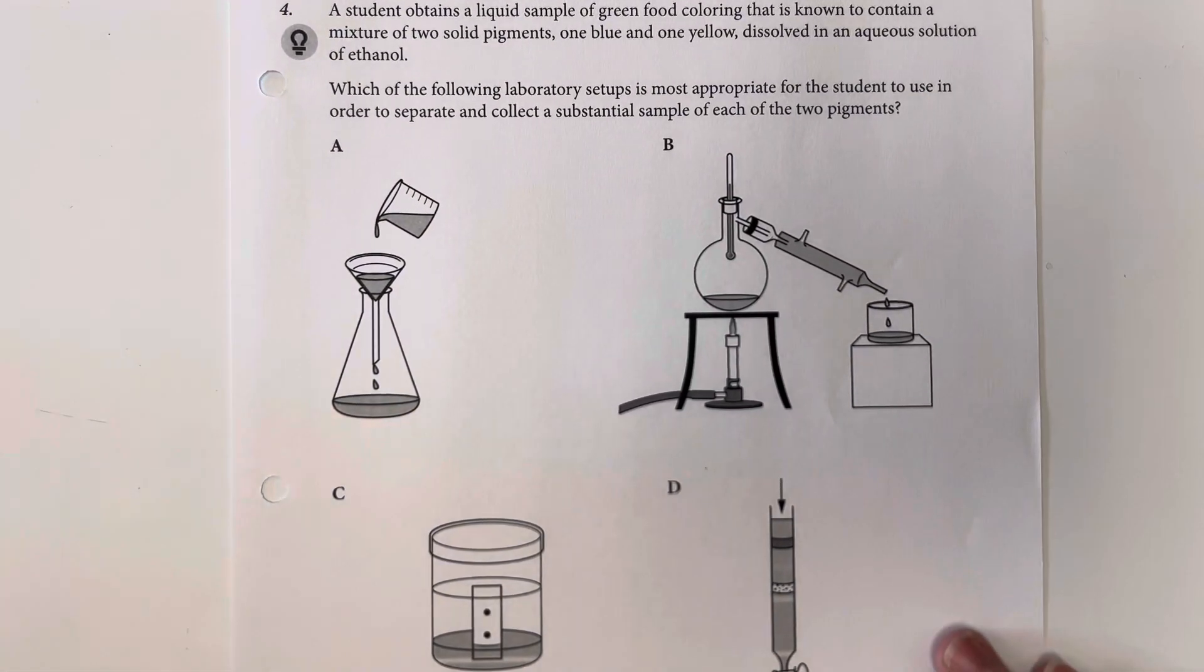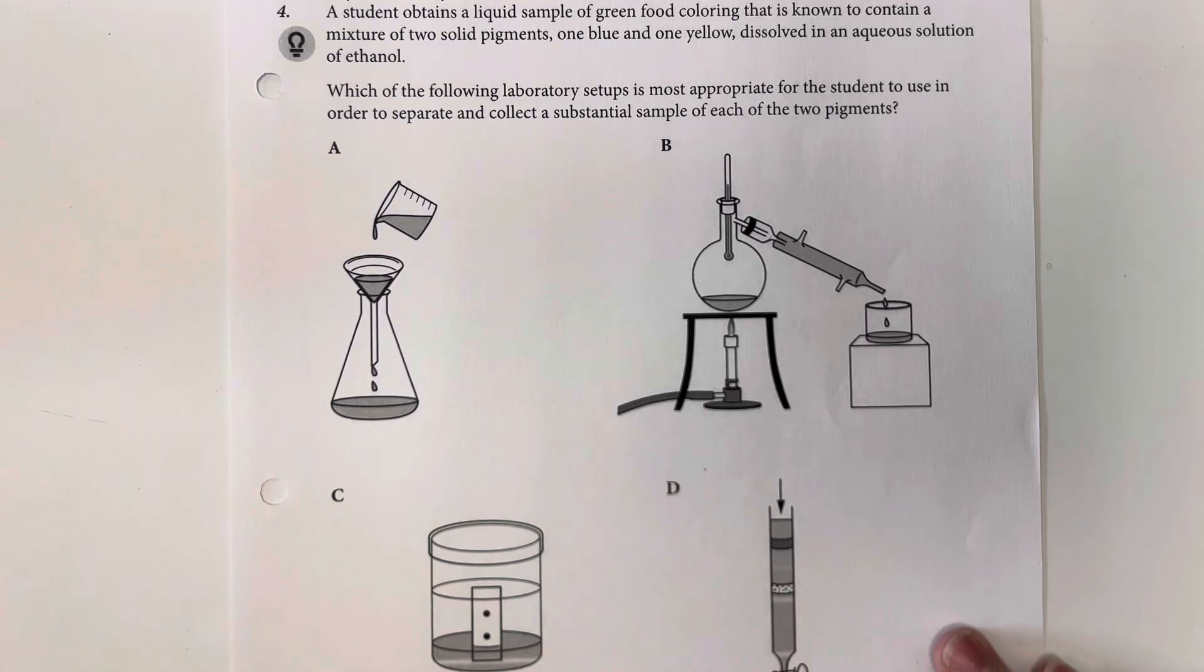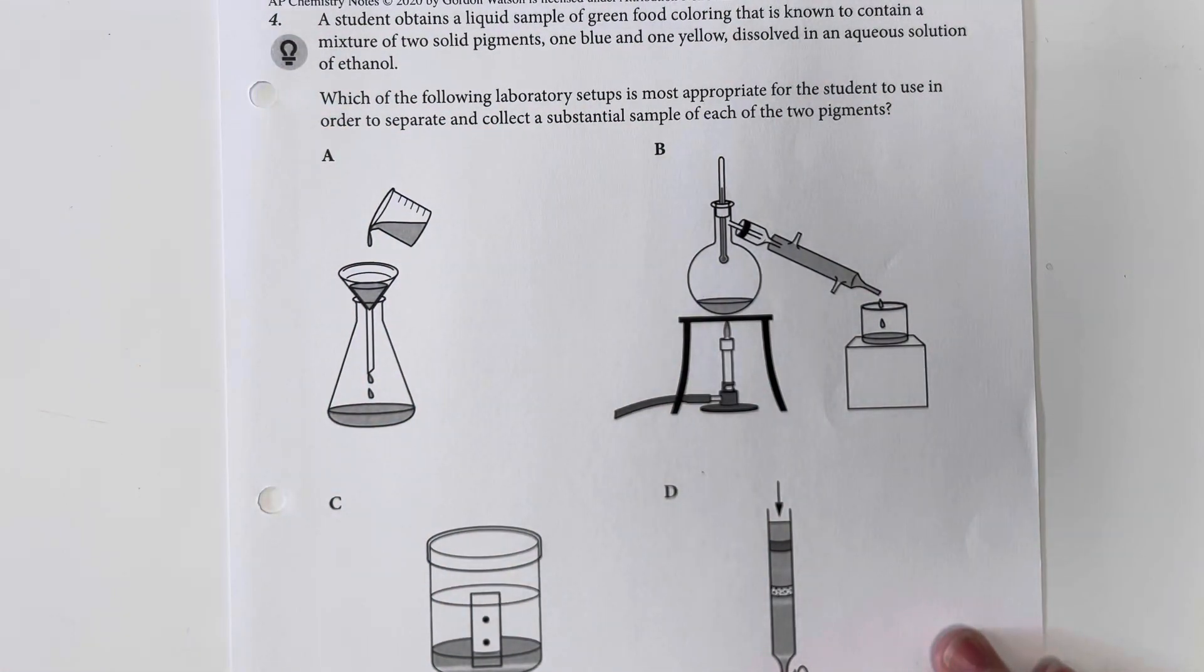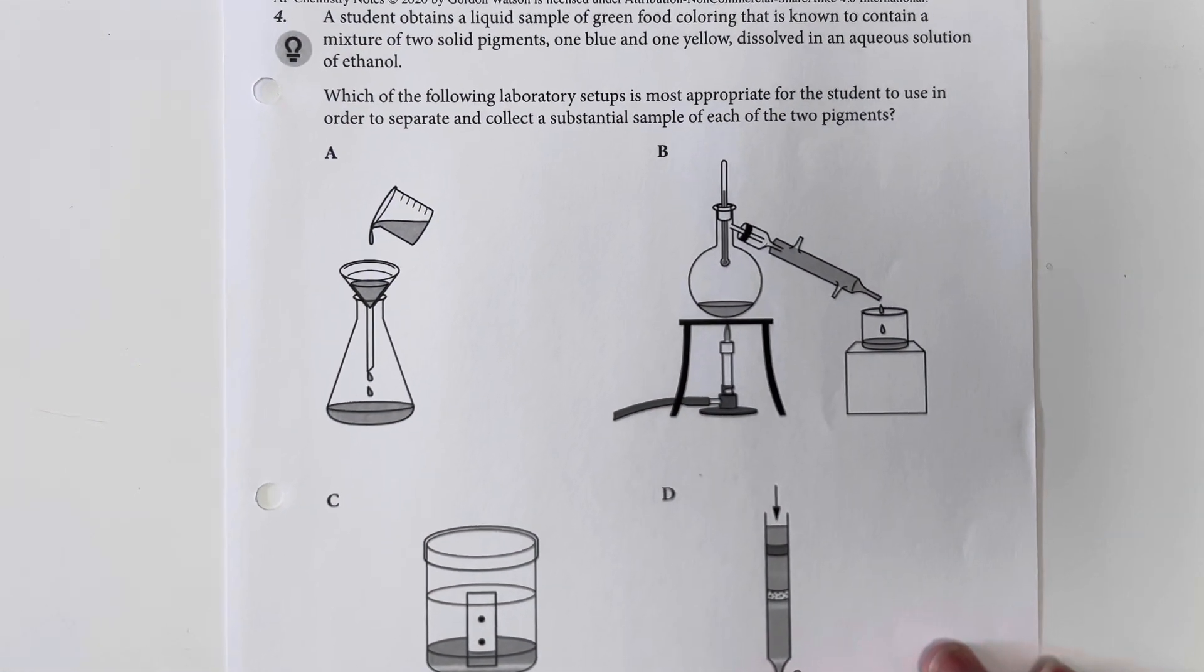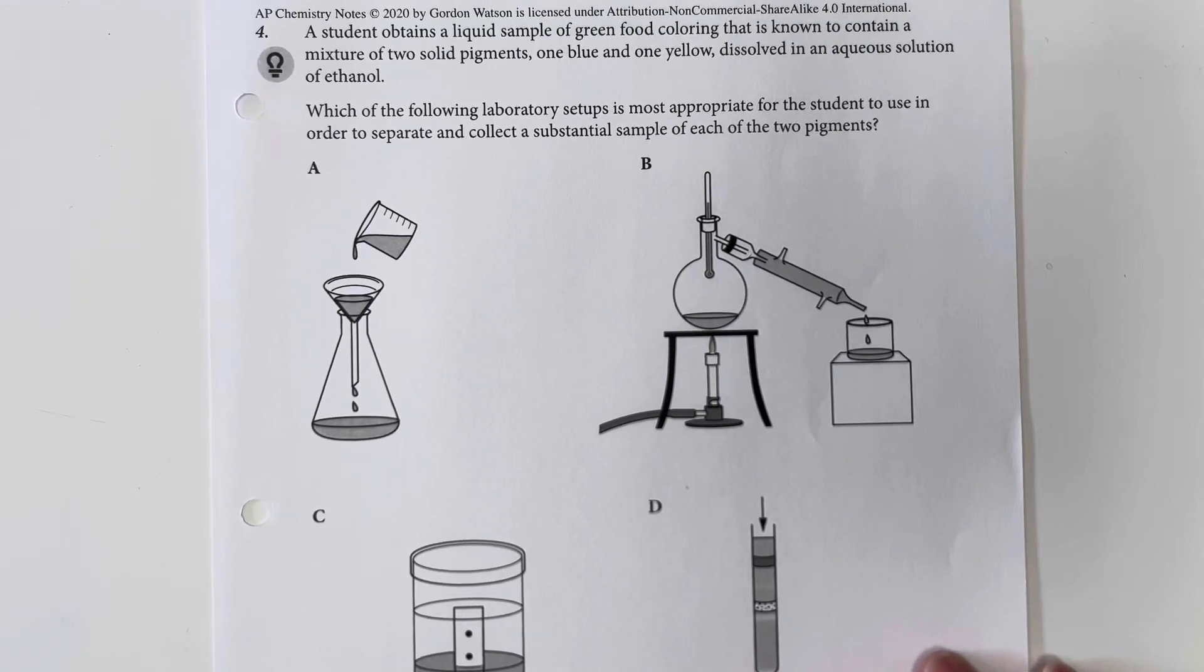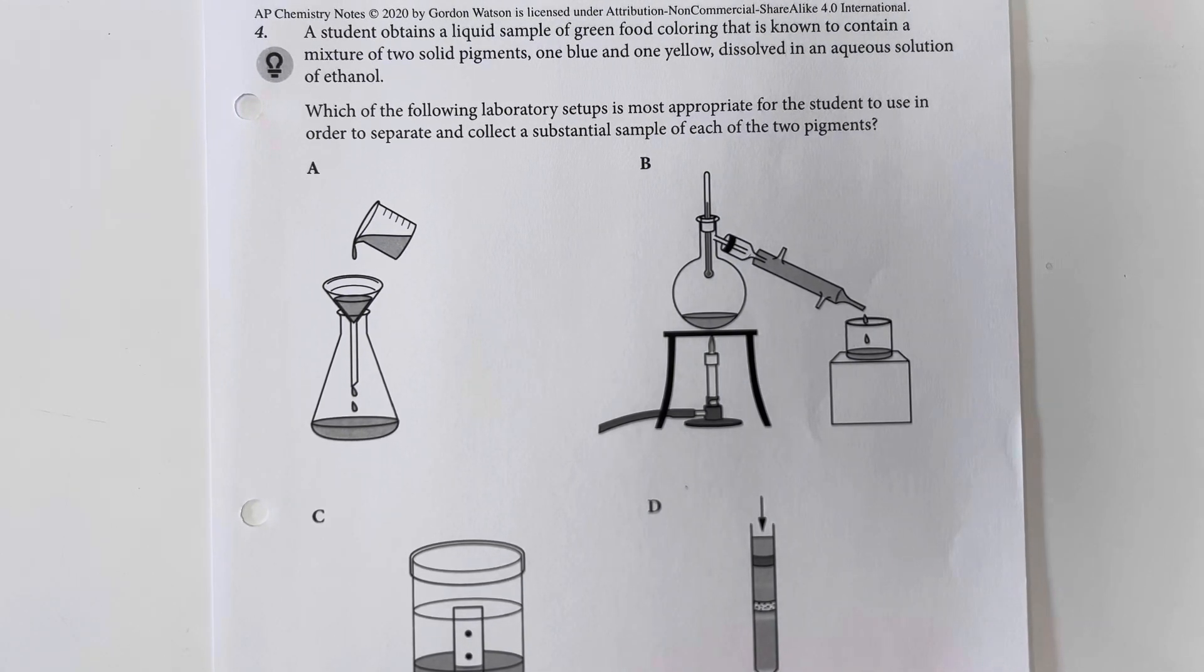A student obtains a liquid sample of green food coloring that is known to contain a mixture of two solid pigments, a blue and a yellow, dissolved within an aqueous solution of ethanol. Which of the following laboratory setups is most appropriate for the student to use in order to separate and collect a substantial sample of each of the two pigments?